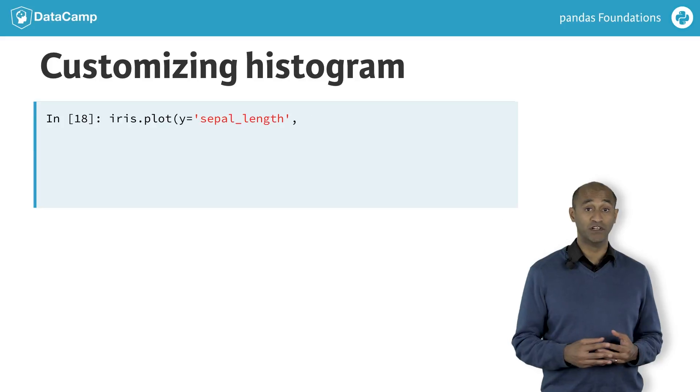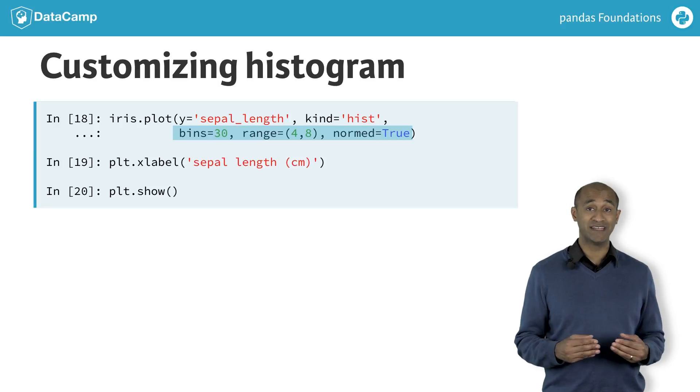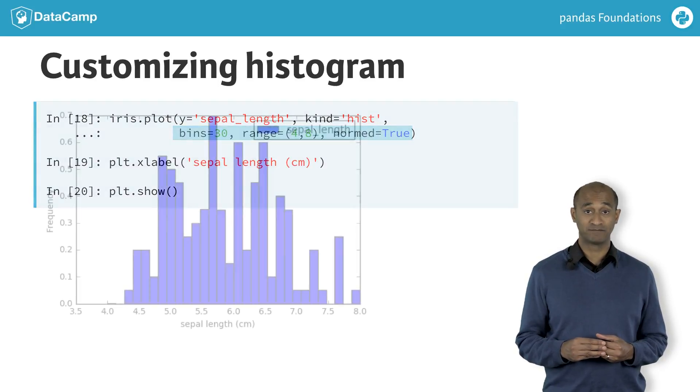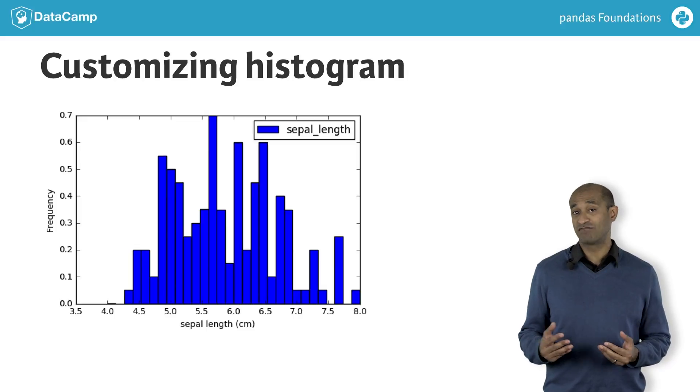Using more keyword options improves the histogram. Here, we specify 30 bins and a range from 4 to 8 and a normed histogram. The customized histogram shows at least three distinct pieces in the distribution of sepal lengths. This suggests groups or subpopulations in the data.